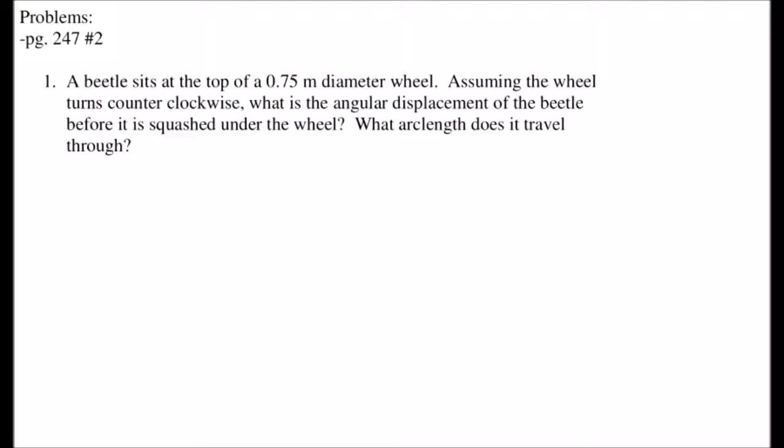Okay so our next problem is going to be: a beetle sits at the top of a 0.75 meter diameter wheel. Assuming the wheel turns counterclockwise, what is the angular displacement of the beetle before it is squashed under the wheel? Also what arc length does it travel through? All right so we've got ourselves a wheel here and we've got a little beetle sitting on top of this wheel. Now this beetle, where does it have to go in order for it to be squashed?